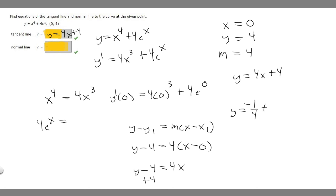We keep everything else the same. So we have y equals minus 1 over 4x plus 4. That's the answer to this question. We found the tangent line and the normal line.